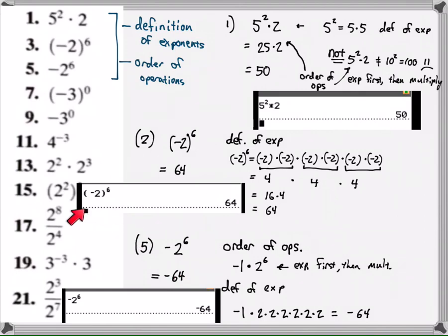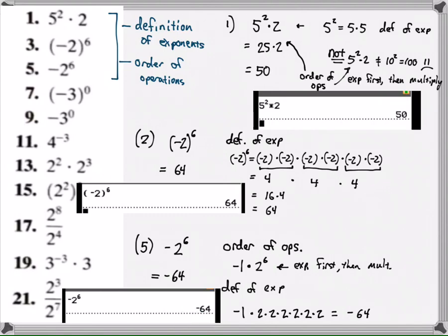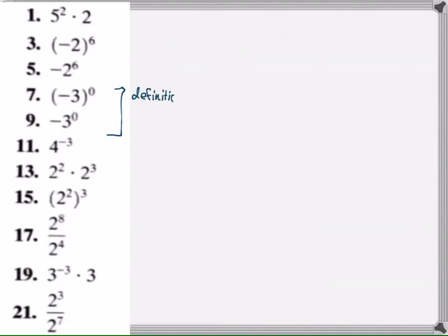If you're a doubter, check any normal calculator. If you put parentheses negative two to the sixth power, you get the positive result. If you leave the parentheses out, your calculator knows the order of operations — it will exponent first and then make it negative. All this stuff should be checked on the calculator, even if it's simple, just to make sure you're not making some crazy mistake.